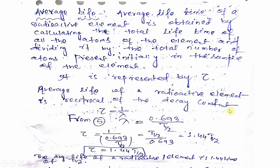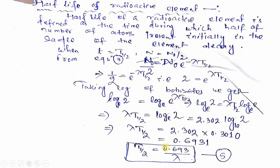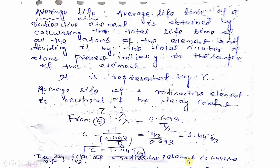From equation 5, discussed in the previous class, T-half equals 0.693 by lambda. From this, lambda equals 0.693 divided by T-half. Substituting into tau = 1/lambda, we get tau = 1 divided by (0.693/T-half), which equals T-half divided by 0.693. Since 1/0.693 equals 1.44, the average life tau equals 1.44 × T-half.